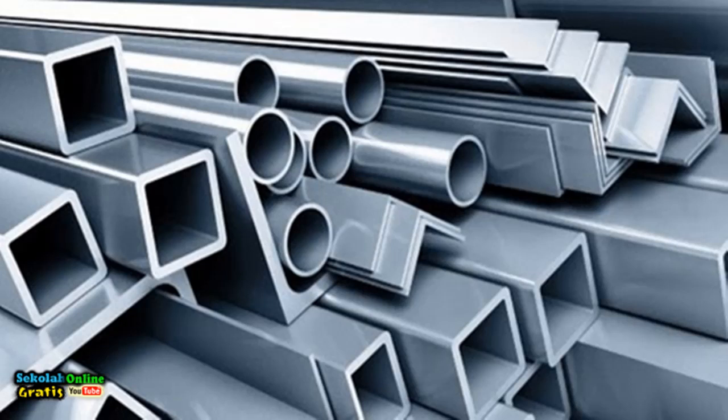Galvalume is a thin steel coated with aluminum AL 55%, zinc ZN 43%, and silicon SI 1.6%. Galvalume is usually used for roof trusses because it is anti-rust, environmentally friendly and strong.